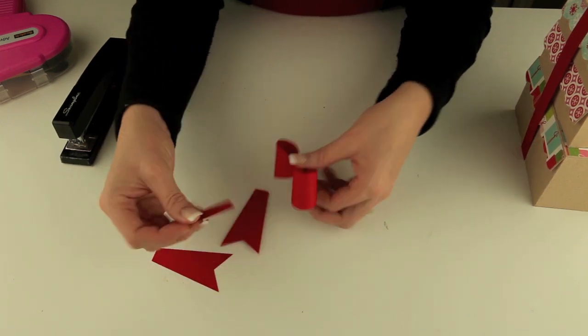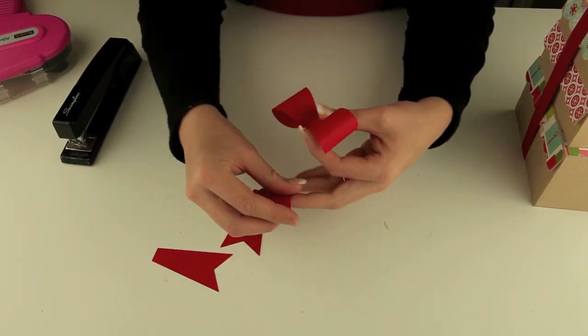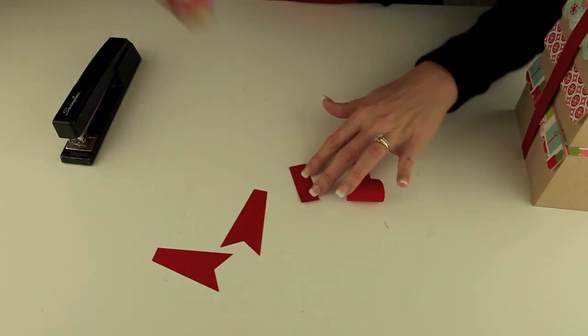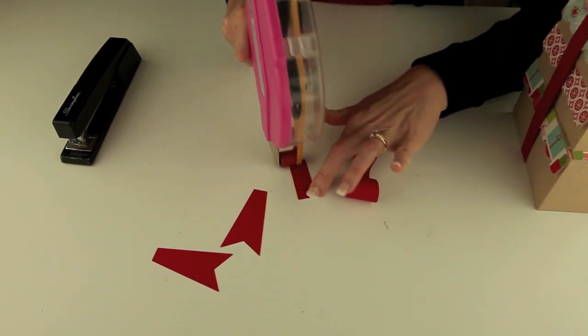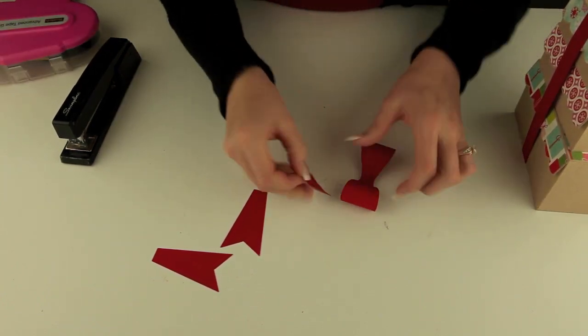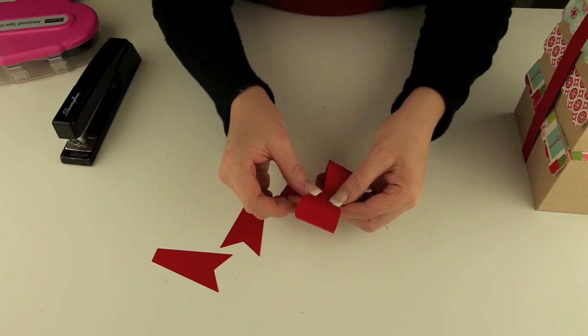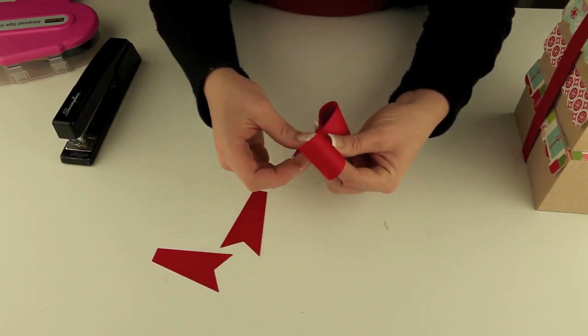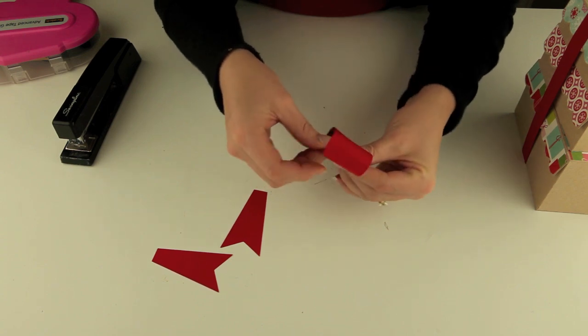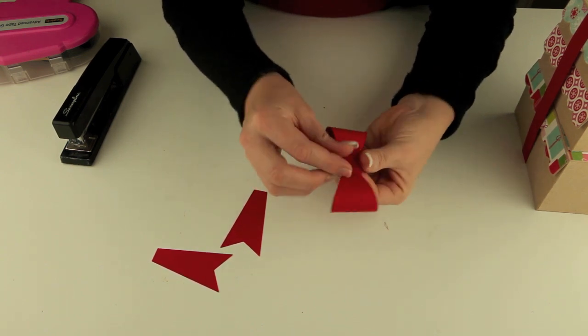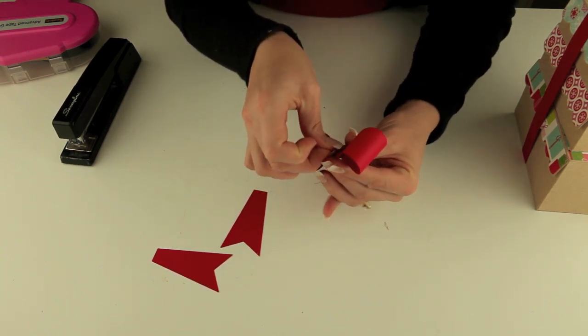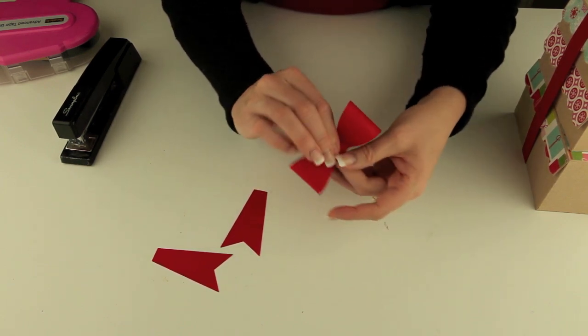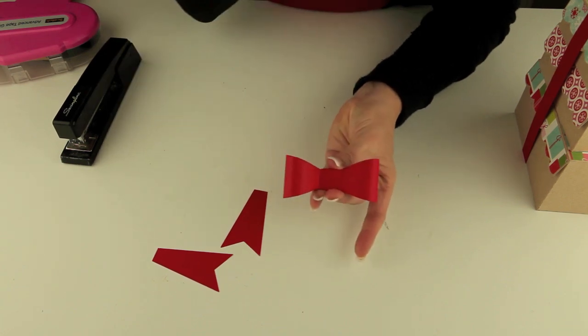Now you have the little rectangle piece here with the score lines and that folds perfectly to wrap right around the center. I'm going to put a little adhesive on that first. Just go ahead and I'm going to start on the back side and just wrap that right around. Just glue it to itself on the back. Just get it to be kind of squared up. That's our bow.